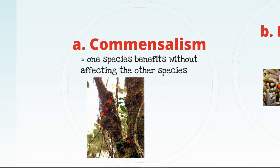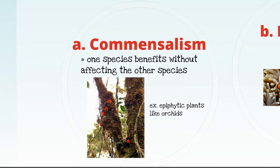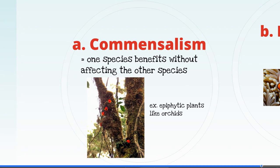Commensalism is when one species benefits without affecting the other at all. An example is an epiphytic plant — this orchid-like plant grows on a much larger rainforest tree. It's not a parasite; it's not sucking nutrients from the tree and isn't heavy enough to affect the branches. But it benefits by getting up high in the rainforest canopy to reach light, while the tree is unaffected. That's commensalism.